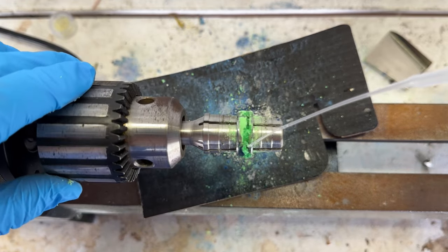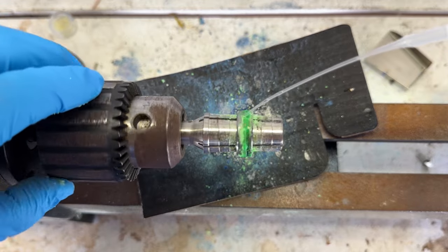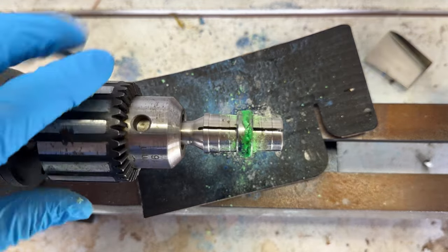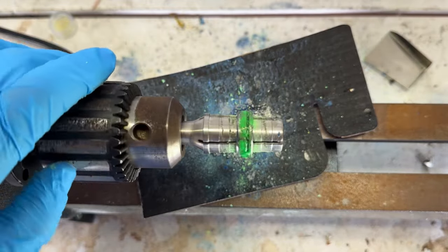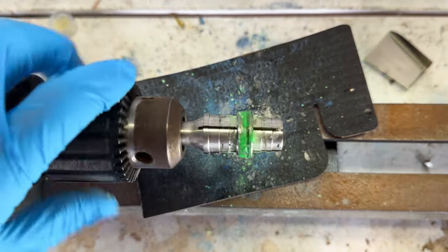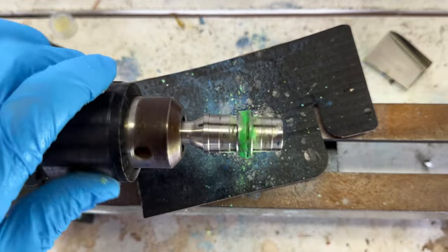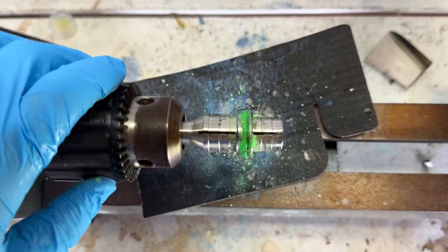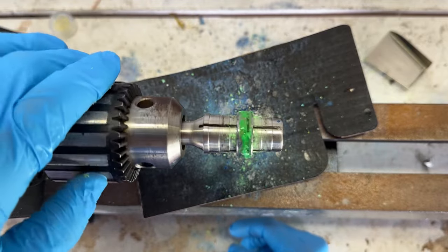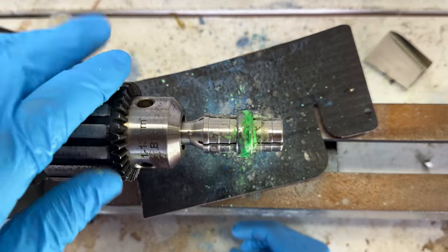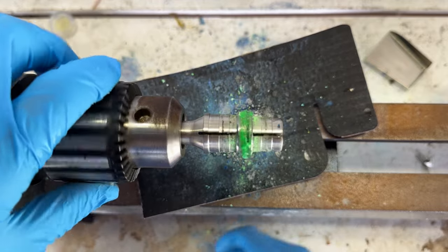I'm still going to use super thin so that it gets in there nicely and I'm just going to keep it spinning with my hand so it doesn't build up on any certain spot. Go ahead and hit it with the accelerator. I'll keep spinning this for another ten seconds or so while that accelerator really sets in and then I'm going to do the same thing and wait another four or five minutes and build up the glue one more time.